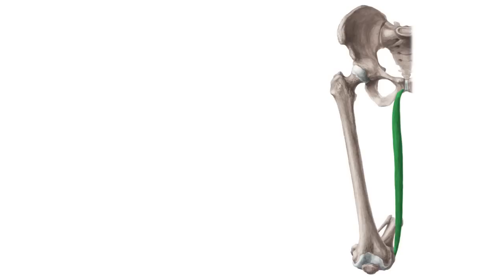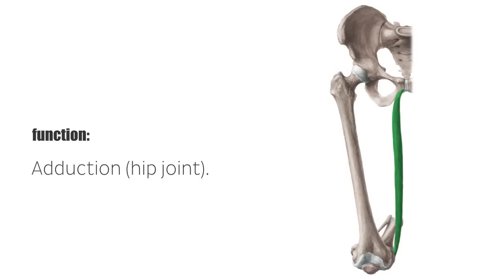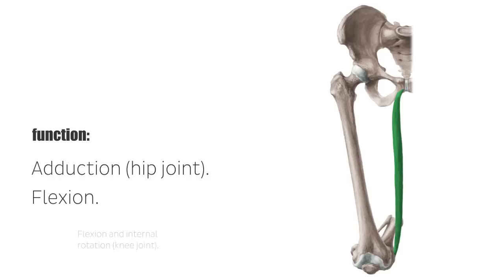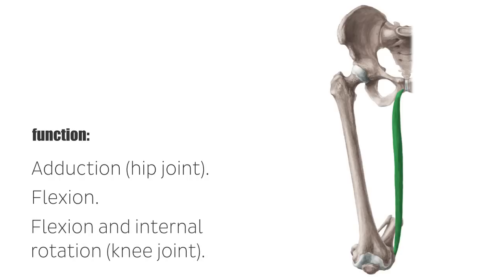As the name suggests, the main function of the hip adductors is the adduction of the hip joint. Furthermore, the gracilis supports flexion. As the only two-joint adductor, the gracilis muscle moves the knee as well, where its contraction causes a flexion and internal rotation of the knee joint.